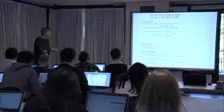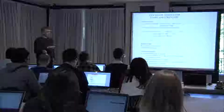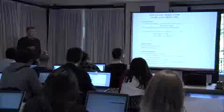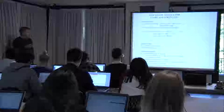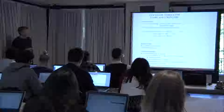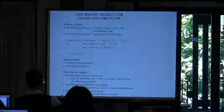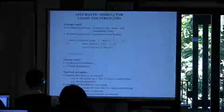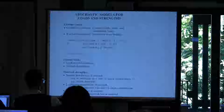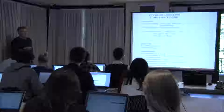For material strengths, there are three candidate distribution functions. The normal distribution can be justified theoretically — if strength is a sum of many contributions with no dominant term, it will be normally distributed. This is a good candidate for ductile materials. However, the normal distribution has the drawback that it allows negative realizations, which has no physical meaning for strength, so it is almost never used except in crude calculations.